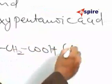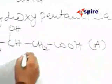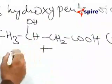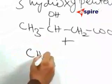Let us name this as compound A and now you are combining this with the second one, 3-hydroxypentanoic acid.